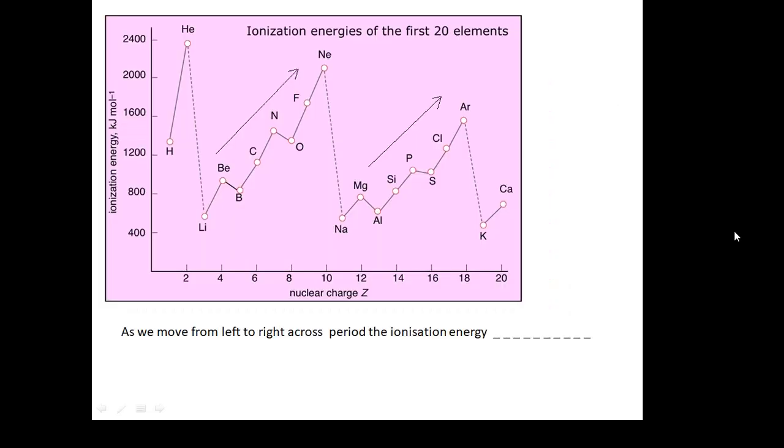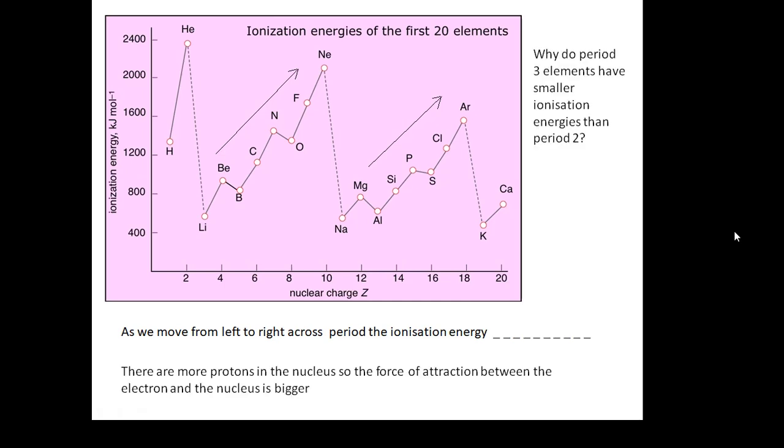So why does it get bigger? As we move from left to right, the ionisation energy gets bigger. Why? Because there's more protons in the nucleus, so the electron is attracted more to the atom, so it's harder to take it away. Why do period 3 elements have smaller ionisation energies than period 2? Because period 3 elements have another shell, so the electrons are further away from the nucleus, so the attractive force is weaker, so it's easier to remove them.